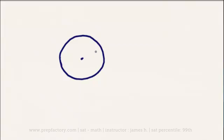The distance from the center to any point on the circle is called the radius. We have a center to any circle, and from that center, any straight line to the edge of the circle is its radius. Any and all of these lines are exactly the same distance, and they are all what's called the radius.